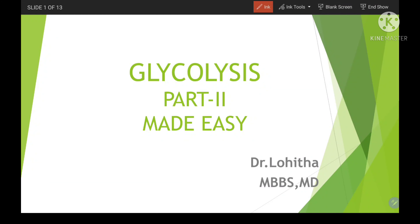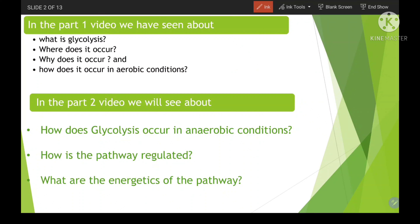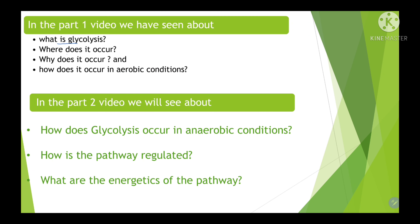Hello everyone, today the topic is glycolysis. In the Part 1 video we have seen about what is glycolysis, where does it occur, why does it occur, and how does it occur in aerobic conditions. Now in the Part 2 video we will see about how glycolysis occurs in anaerobic conditions, how the pathway is regulated, and what are the energetics of the pathway in both aerobic and anaerobic conditions.